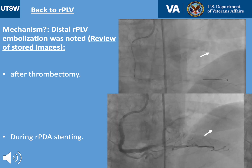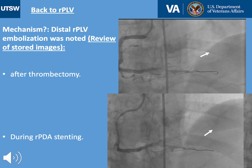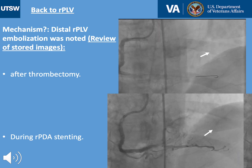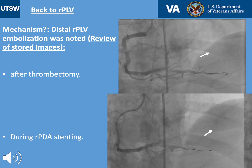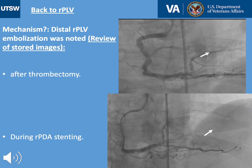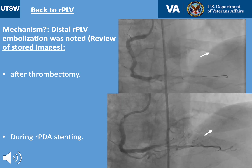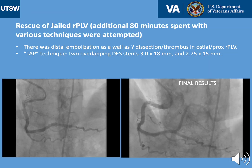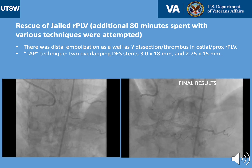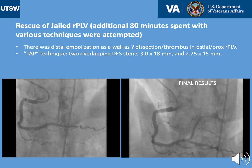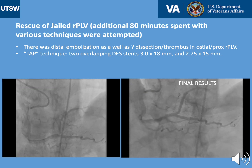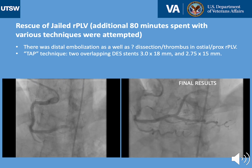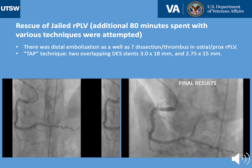We still had to deal with the compromised PLV branch. Reviewing the stored images, we realized the issues with that branch happened early on during the case — after the thrombectomy and during stenting — where we noted distal embolization in the vessel. As seen on the left side of the screen, there was distal embolization in the PLV branch that probably happened early in the procedure, as well as what appeared to be thrombus, dissection, or both in the proximal segment of the PLV branch.